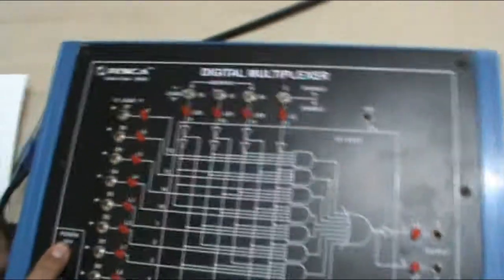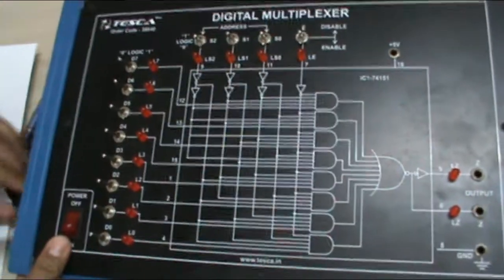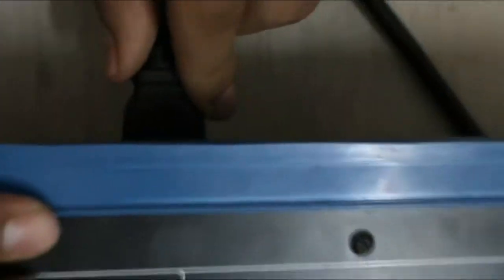Now this is our equipment in which this is the power main on-off switch. First we connect the 230V AC supply from here. Now these are the 8 LEDs.